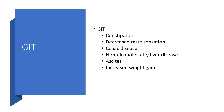Constipation — because everything is slow, including peristalsis. Decreased taste sensation. Celiac disease, because it has an autoimmune basis, and the hypothyroidism may be secondary to Hashimoto's. Non-alcoholic fatty liver disease and increased weight gain are also features.